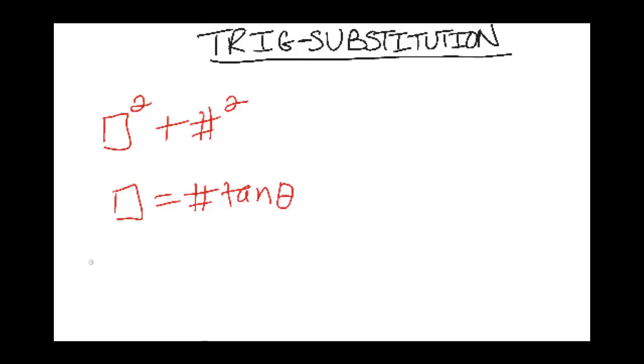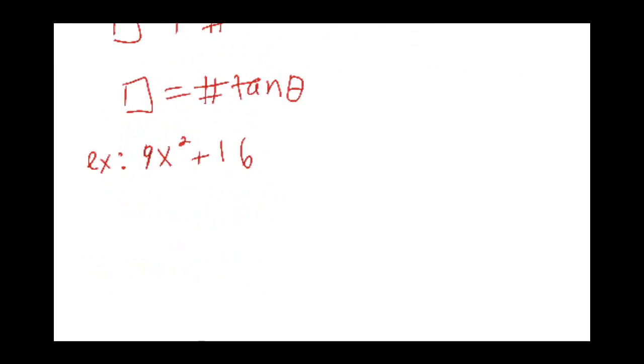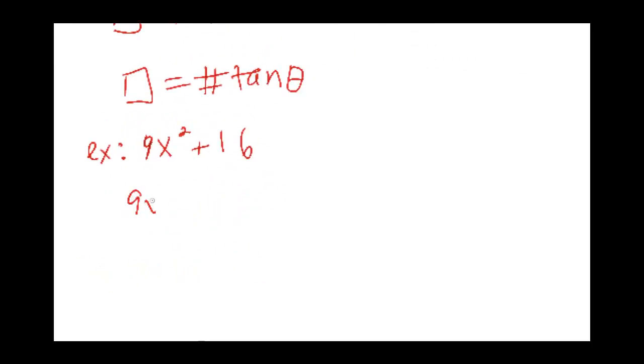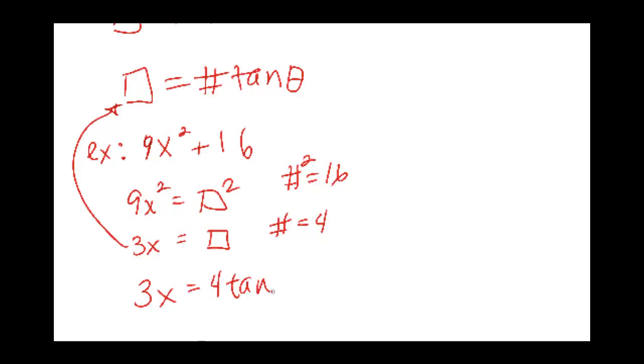So an example would be if you had 9x squared plus 16. What you would do is you would let 9x squared be your box squared. So 3x, square rooting both sides, would be your box. And then doing the same thing with the numerical value, we'd have number squared equals 16, number equals 4, so your substitution in this one would have been set up initially like that.